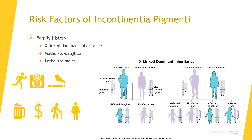The risk factor for incontinentia pigmenti is family history. This disease has a pattern of X-linked dominant inheritance and is generally passed from mother to daughter. If this gene is passed to a son, it will be lethal, because the male would only have one copy of this gene on the X chromosome.